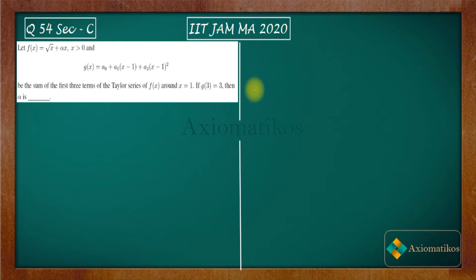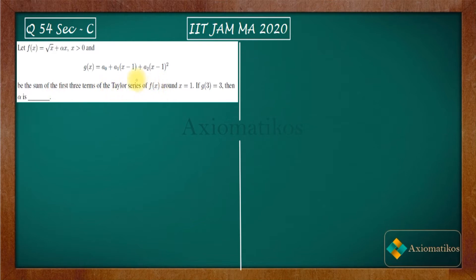Hello dear students, welcome to ExeoMatic course. This video is part of the solution series for IIT JAM 2020. We are here with problem 54 of your paper — it's a section C numerical type problem. Let f(x) be given by root(x) + alpha*x where x > 0, and g(x) is the sum of the first three terms of the Taylor series of f(x). It is given that g(3) = 3, and we have to find alpha.